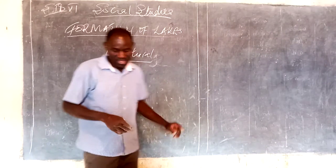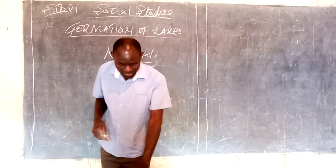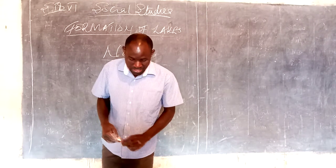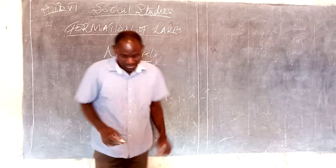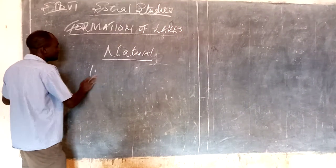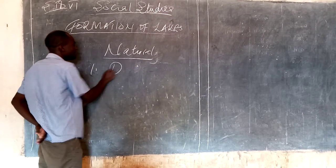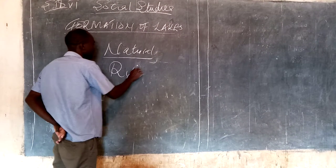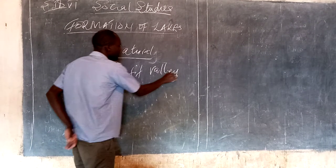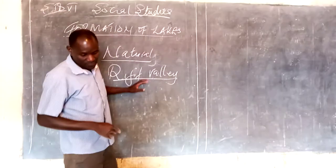We have A, B, and C. We want to look at them one by one, beginning with natural lakes. The first type of natural lakes we have are known as rift valley lakes. They are mainly rift valley lakes, and these were formed naturally.